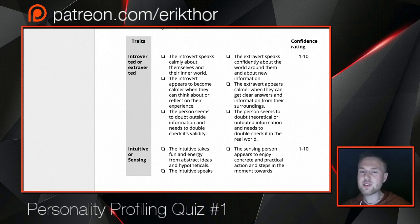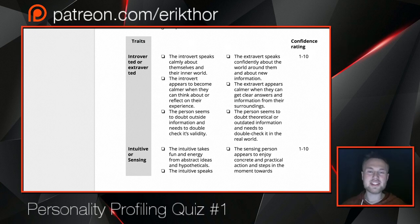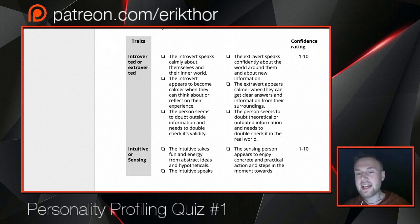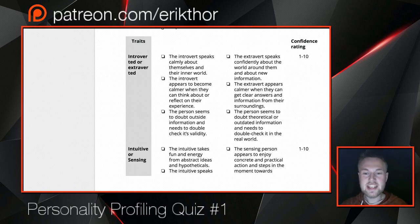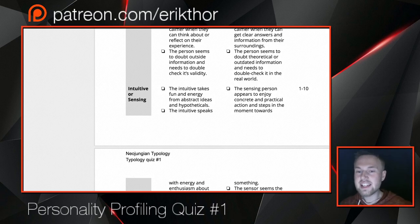The introvert tends to doubt outside information and needs to double-check its validity — they want to back up what they see with knowledge or theory. The extrovert, on the other hand, appears calmer when they can get clear answers and information from their surroundings. The extrovert doubts theoretical or outdated information and needs to reaffirm that it's still true and still applies. The intuitive takes more fun and energy from abstract ideas and hypotheticals.